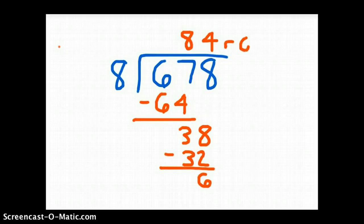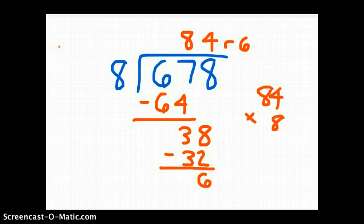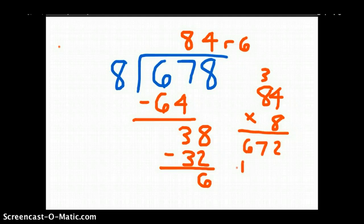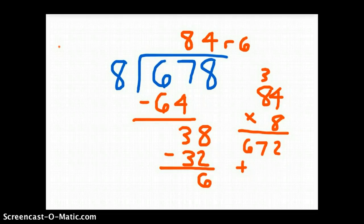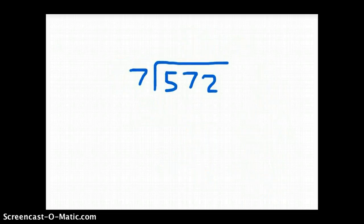So our remainder is 6. Our check is just as before, where we take 84, we multiply it by 8, and we add in the remainder.